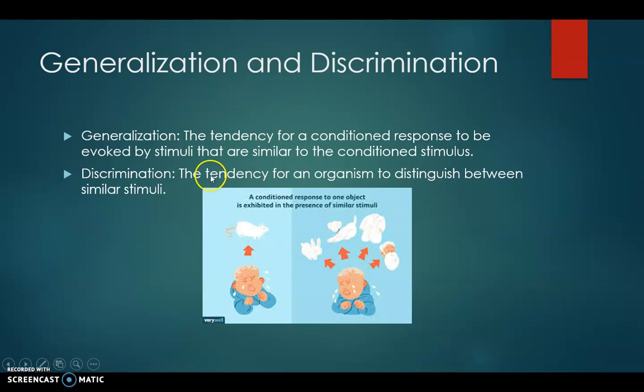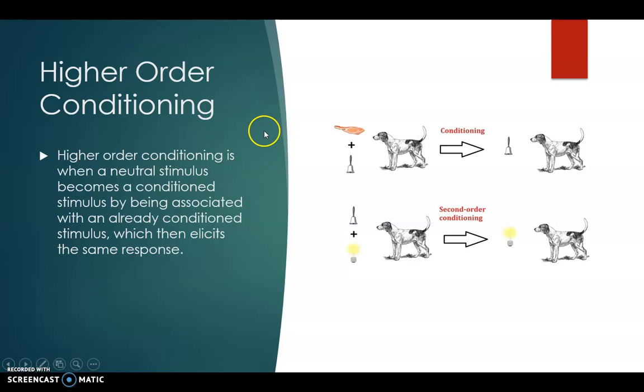Discrimination is basically the opposite of that. So it's the tendency for an organism to distinguish between similar stimuli. So discrimination would be if this rat elicited this response, however, he would be able to tell the difference between each of these from the rat, and these would not elicit this response.